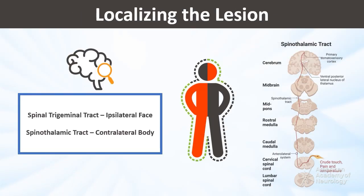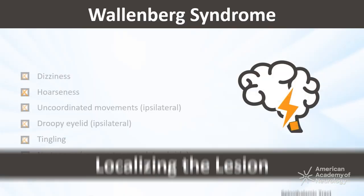After conducting a comprehensive physical exam, it was determined that the patient's sensory deficits in the ipsilateral face and contralateral body likely stem from spinal trigeminal and spinothalamic tract damage, respectively. Hoarseness, left-sided ataxia, left-sided Horner syndrome, and the right-beating nystagmus on right gaze indicate a lesion in the left lateral medulla, consistent with Wallenberg syndrome.